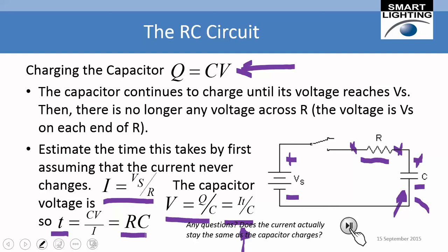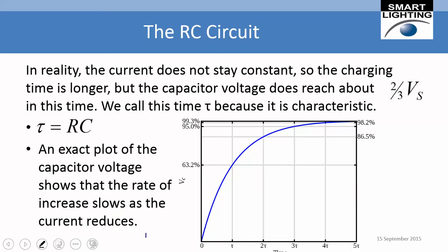In reality the current does not stay constant, so the charging time is longer. However, the capacitor voltage does reach about 63% — roughly two-thirds — of its final value in a time tau equals rc. Here is an actual simulation of the capacitor voltage, and you can see it reaches a little more than 63% of the source voltage in a time given by tau.